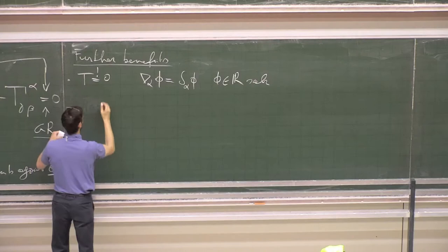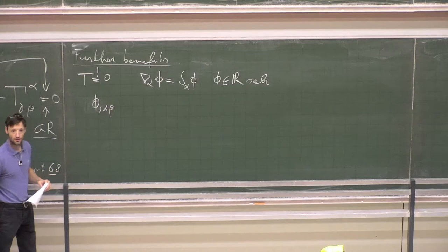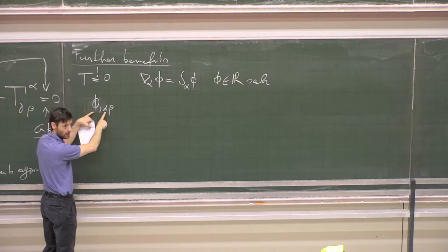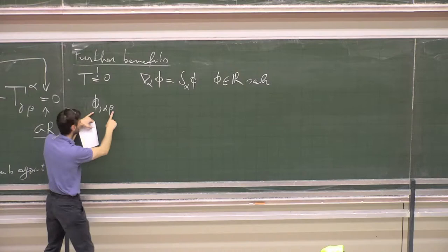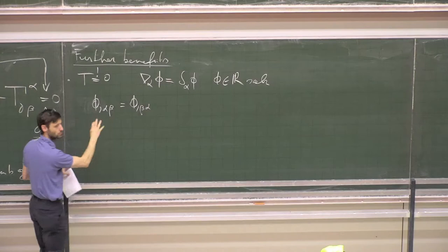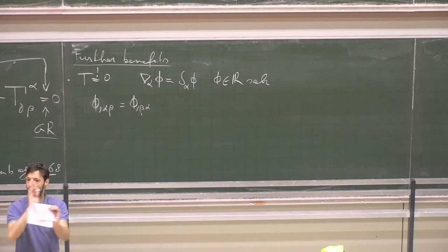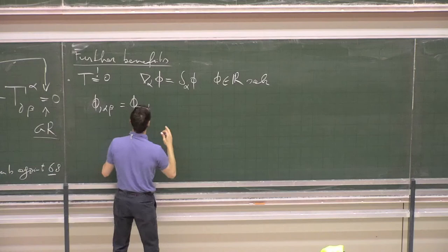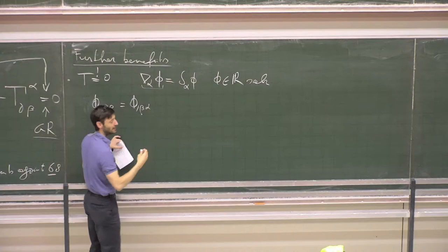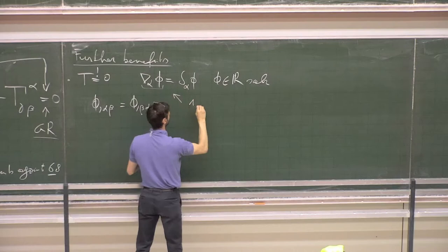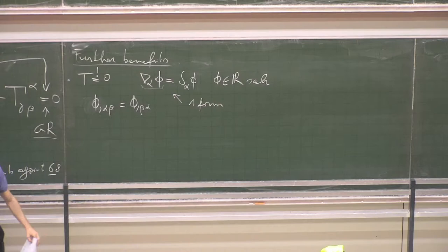For scalars, this commutativity is guaranteed. To prove that, we notice that the first covariant derivative of a scalar is a one-form. And we know how to apply covariant derivatives to one-forms. So if we want to apply the covariant derivative twice, we just apply the formula we have already seen.